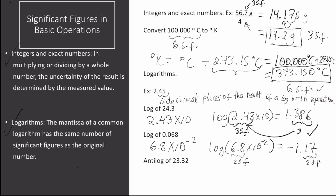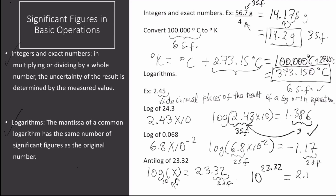Lastly, we have the anti-log of 23.32. To find the anti-log means that log of some number equals 23.32 (base 10). The mantissa here is two decimal places — the decimal places in the result of a log operation. So the number of significant figures of this anti-log has to be 2. Performing the anti-log — that's 10 to the power of 23.32 — using our calculator, we get 2.1 times 10 to the 23rd, which has two significant figures as desired.